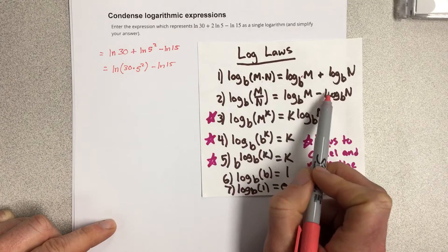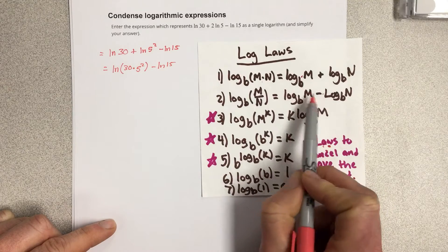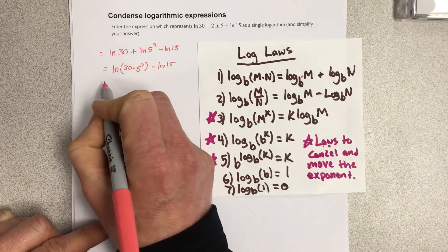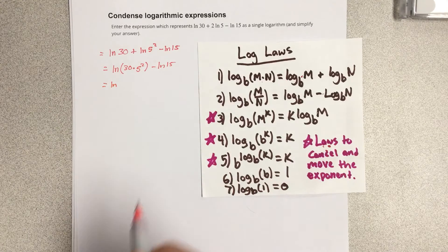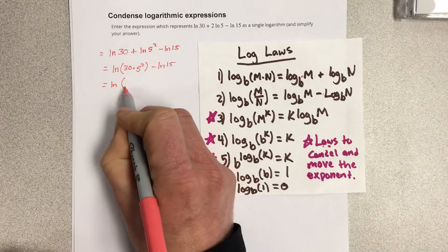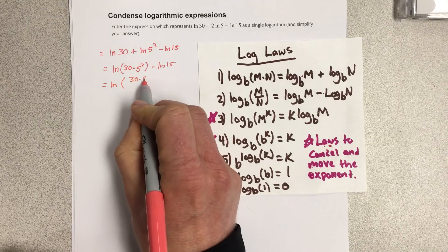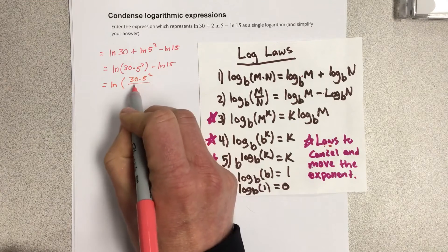Now we're going to do the same thing with the subtraction. We can write that as a division, so we're going to end up with natural log of 30 times 5 squared over 15.